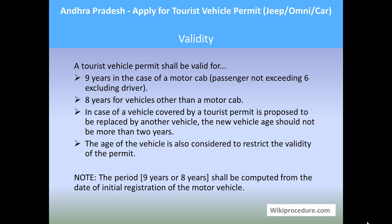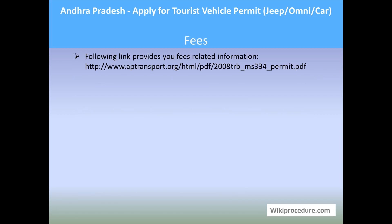Validity: The tourist vehicle permit shall be valid for nine years in the case of a motor cab with passengers not exceeding six (excluding the driver), and eight years for vehicles other than a motor cab. If a vehicle covered by a tourist permit is to be replaced, the new vehicle's age should not exceed two years. The age of the vehicle is also considered in restricting the validity of the permit. Note that the nine-year or eight-year period is computed from the date of initial registration of the motor vehicle.